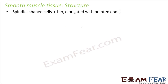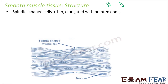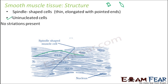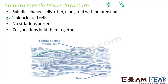Let us look at the structure of smooth muscle tissue. They are spindle-shaped cells — thin and elongated with pointed ends. When we were talking about skeletal muscle tissue, they were long and cylindrical, but here they are spindle-shaped with pointed tips. They are uninucleated cells — that is one major difference: skeletal muscles have multiple nuclei, but smooth muscle cells have just one nucleus. No striations are present, so you do not see those alternate dark and bright bands.